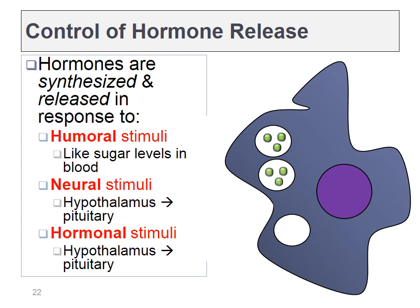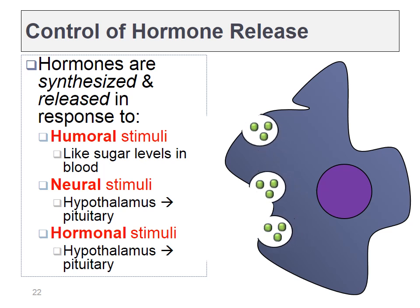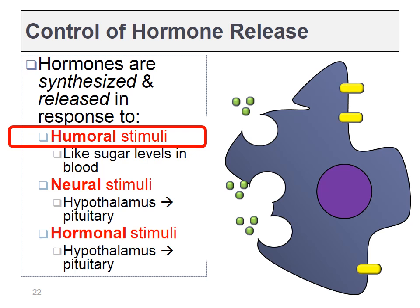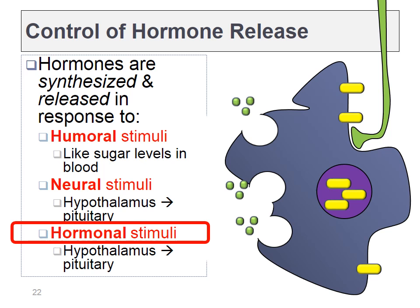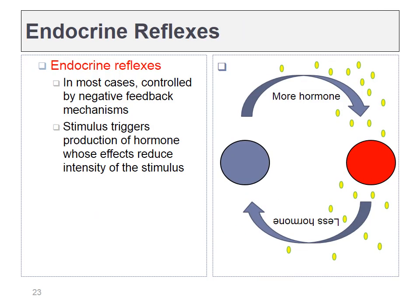Some hormones are produced by their glands in response to humoral stimuli — levels of chemicals in the bloodstream. For instance, the pancreas regulates the amount of insulin it produces based on blood glucose levels. Some endocrine glands also respond to the nervous system. The pituitary can get signals from the hypothalamus to release hormones. The pituitary also responds to hormones that come from the hypothalamus — so we see instances where hormones are produced in response to other hormones. As we produce more of the hormone, there's often a negative feedback loop that blocks its own production. This is called an endocrine reflex.